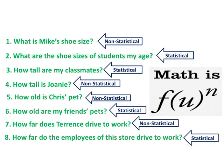Number one is non-statistical. Number two is statistical. Number three: statistical. Number four: non-statistical. Number five: non-statistical. Number six: statistical. Number seven: non-statistical. And number eight: statistical.